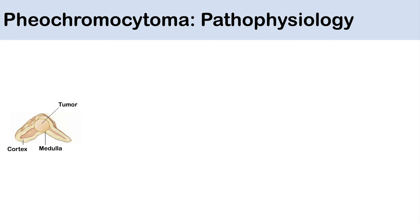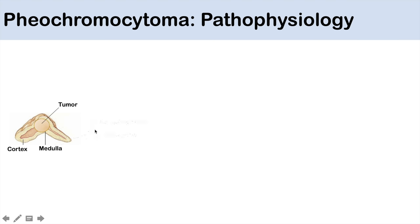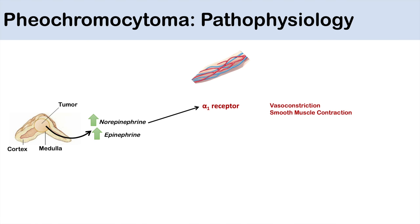Regarding pathophysiology: in pheochromocytoma we have a large tumor in the adrenal medulla composed of chromaffin cells. Normally, chromaffin cells in the medulla produce catecholamines like norepinephrine and epinephrine. But with this tumor, there is hypersecretion of norepinephrine and epinephrine, and smaller amounts of dopamine. These catecholamines then act on adrenergic receptors — alpha-1, alpha-2, beta-1, beta-2, etc.